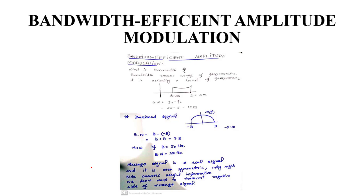First, let's discuss what bandwidth actually means. Bandwidth means the range of frequencies — how much frequency range we have. To find the bandwidth of a signal, we take the high frequency and subtract the low frequency from it, and that gives us the bandwidth.